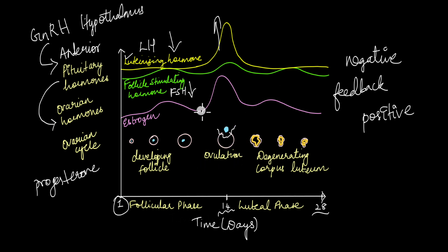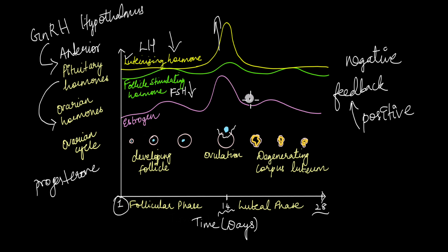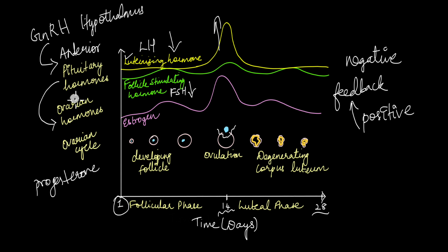For ovulation to occur, you need a peak in estrogen levels and a surge in luteinizing hormone caused by the positive feedback loop between estrogen and LH. Once ovulation happens, the levels of estrogen, luteinizing hormone, and follicle stimulating hormone begin to decrease, while at the same time there is an increase in the levels of progesterone.